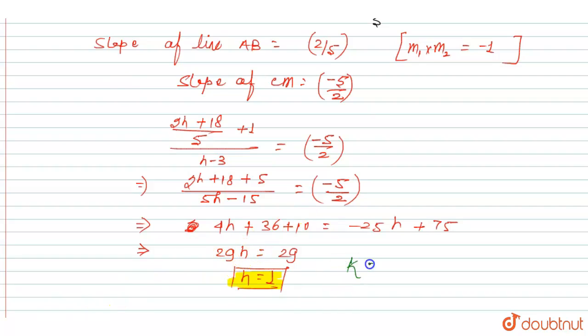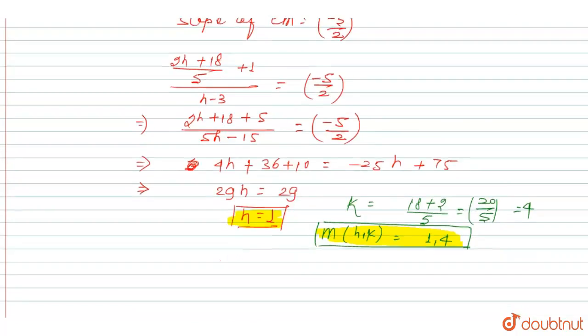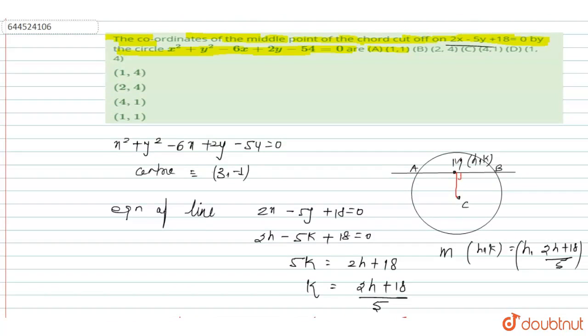Put the value of h equals 1 in the value of k. Then k equals 2h plus 18, the value of h is 1, upon 5. This is equal to 20 by 5, this equals 4. Then coordinate of M is h, k which is equal to 1, 4, and this is the right answer.